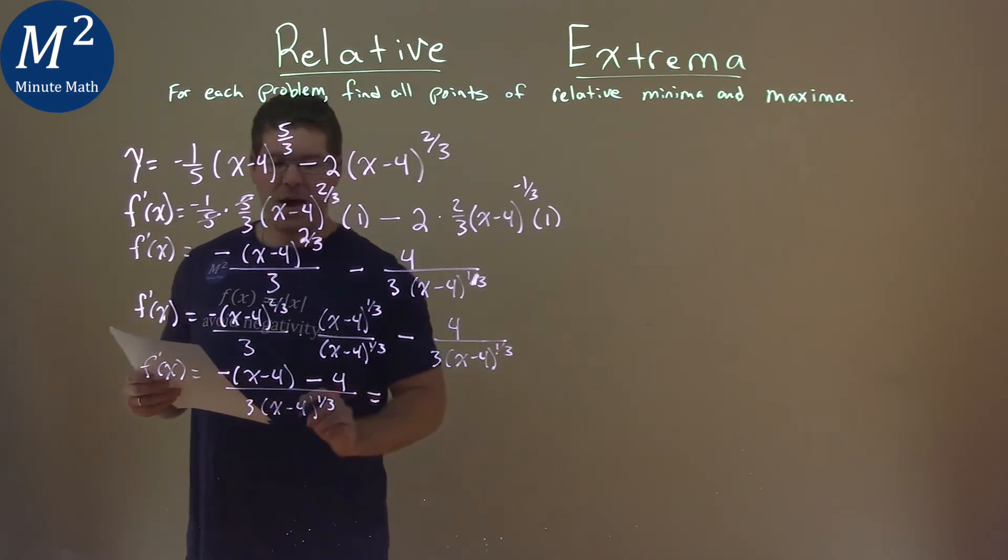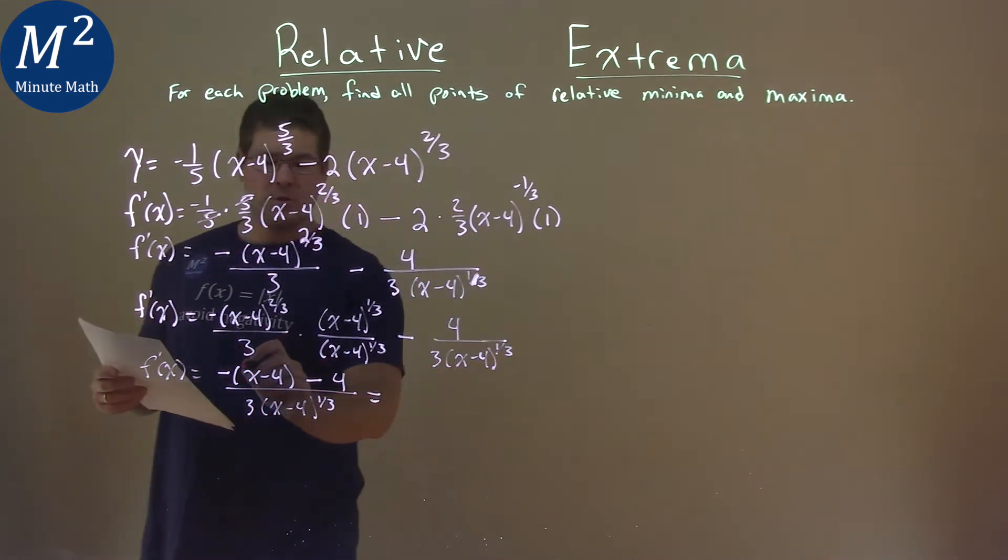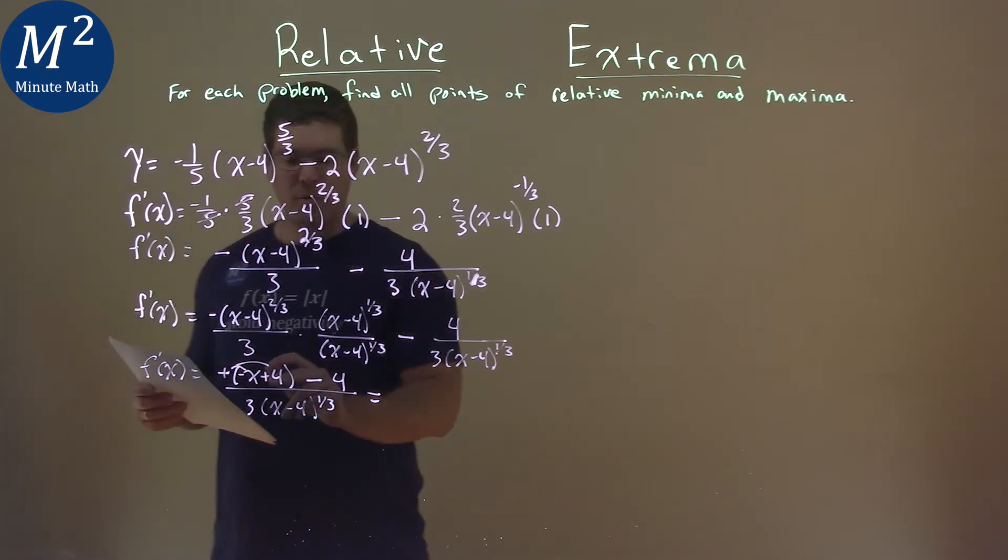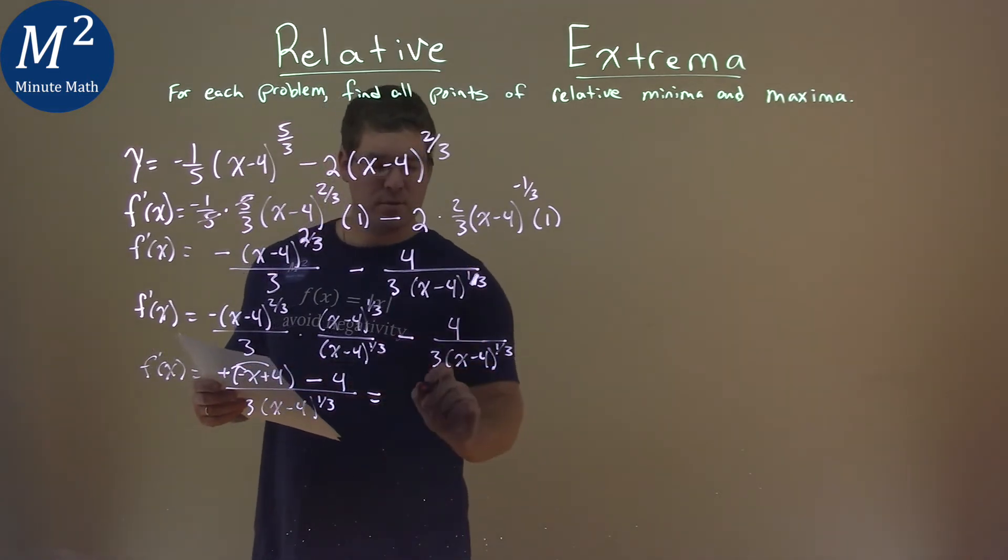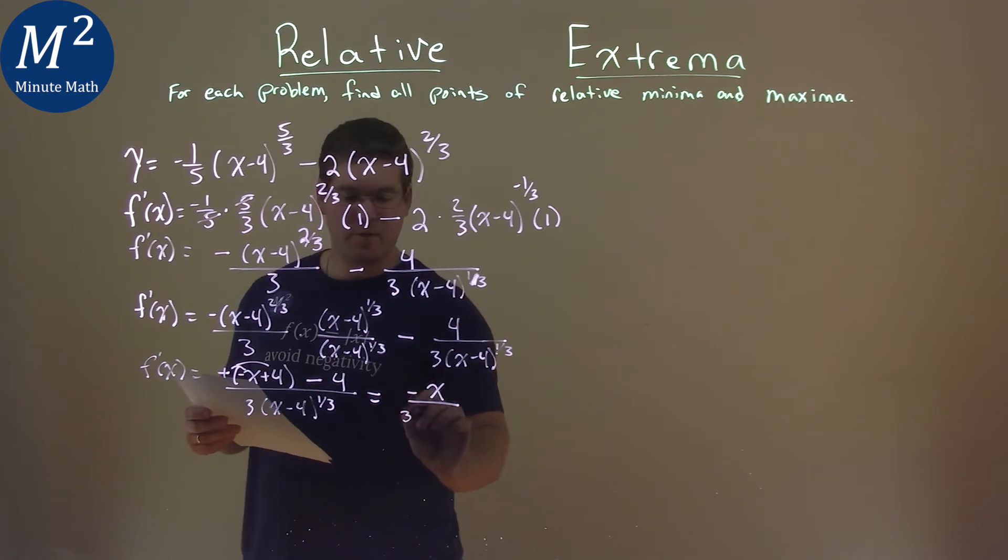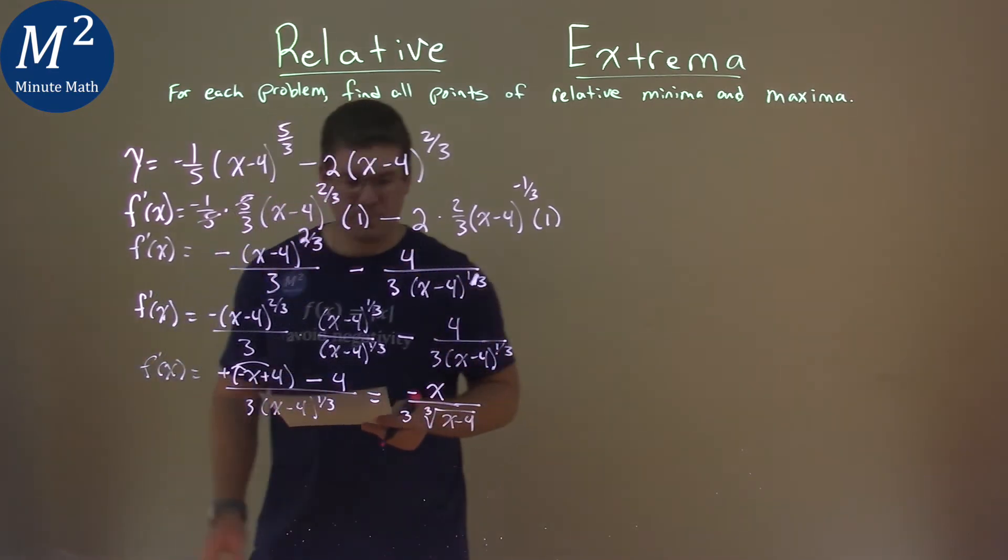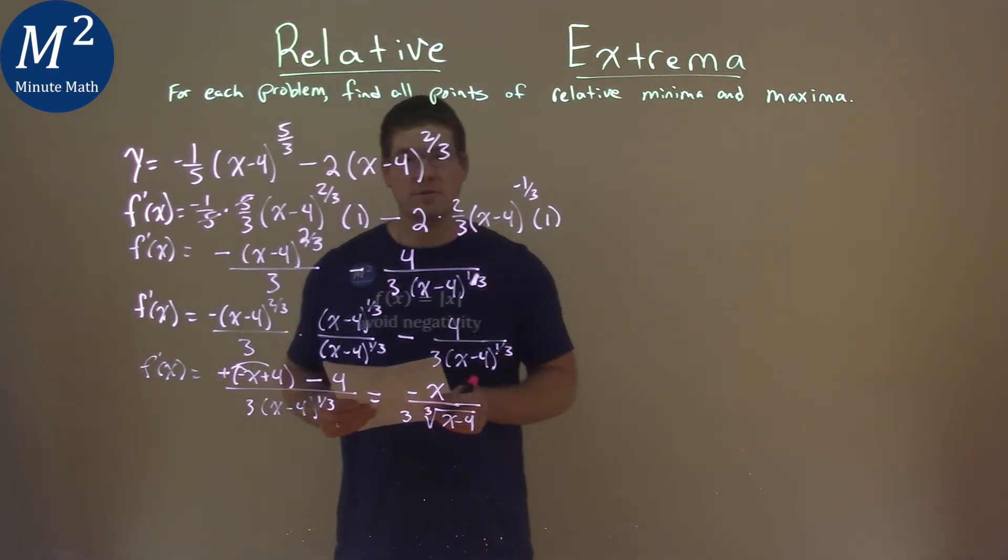Simplifying that over here, we'll just root the negative sign here. That becomes a negative from the x, and then this becomes a positive on the four, and so four minus four is just zero. So, we have a negative x going on here, and the denominator I'm going to write as three times now the third root of x minus four. So, we found our first derivative right there.